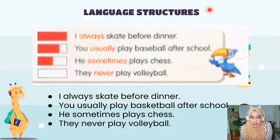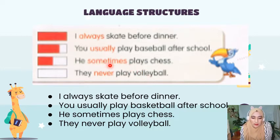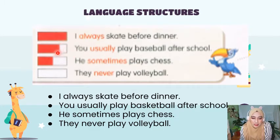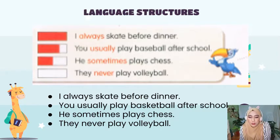Now, look at the top of your page in the textbook. You can see a yellow box with a blue bird and four sentences: I always skate before dinner. You usually play baseball after school. He sometimes plays chess. They never play volleyball. If you notice, all four of these words are in red. For always, the red is 100%. For usually, the red is 75%. For sometimes, the red is 50%. While for never, the red is zero.